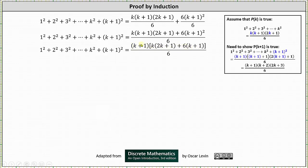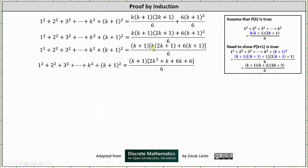The reason we wanted to factor out (k+1) is because we do want a factor of (k+1) in the numerator in our final step. Now we are going to simplify the expression inside the brackets by distributing k and distributing 6, which gives us 2k² + k + 6k + 6, and now we'll combine like terms inside the brackets.